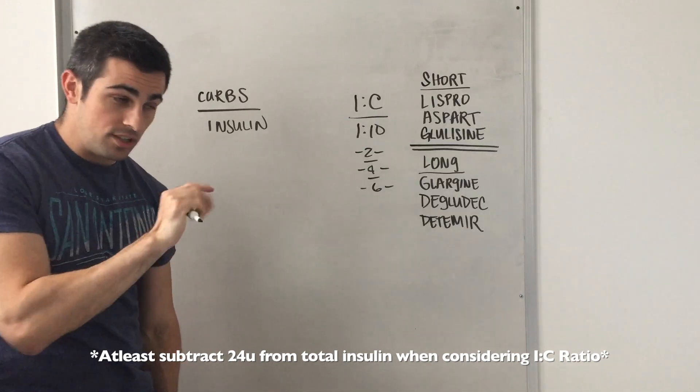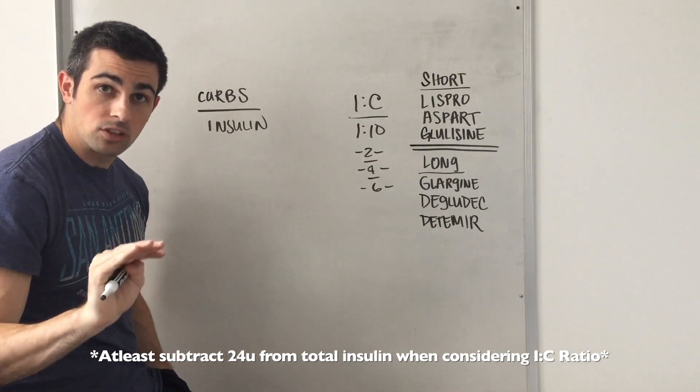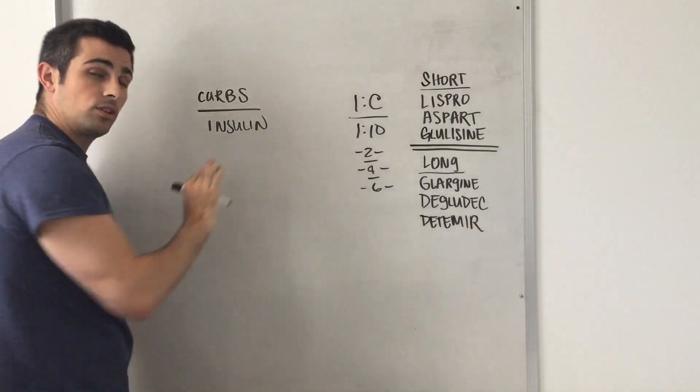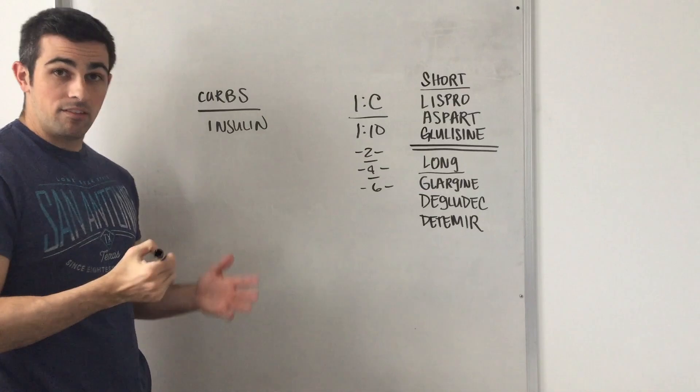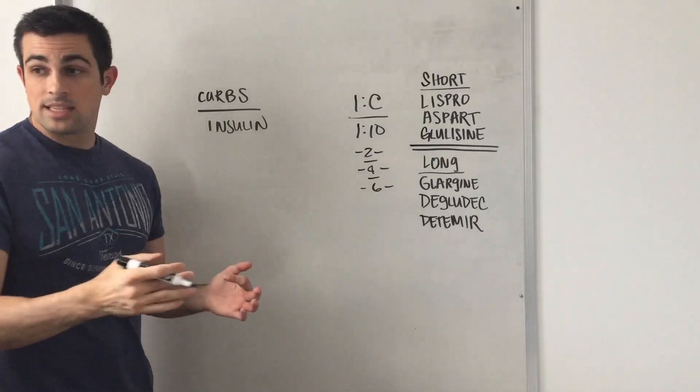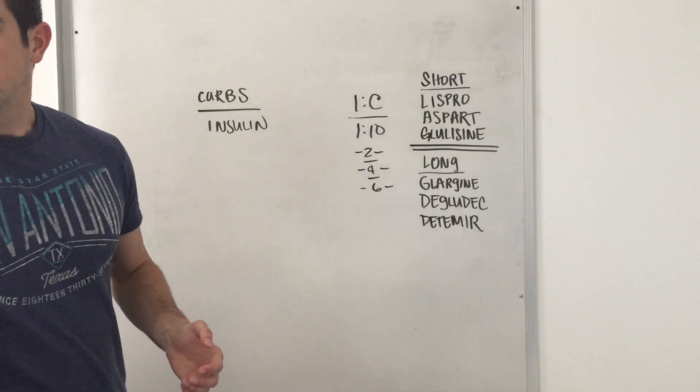So you're going to want to disregard that 24 units of glargine that we were providing and really only look at how much insulin we're giving in general. So if we were giving 20 units of insulin, right?